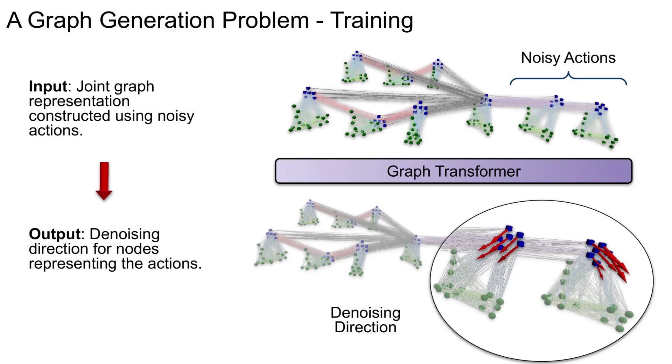Using such a graph representation, we turn in-context imitation learning into a graph generation problem by employing a graph-based diffusion model.